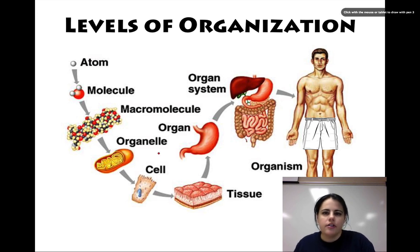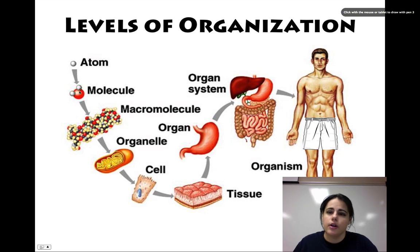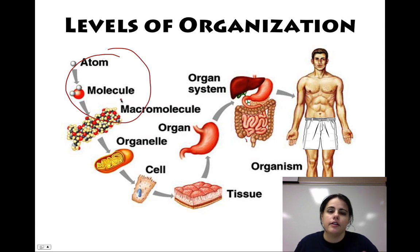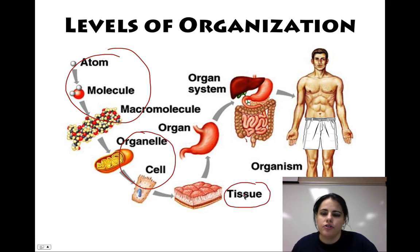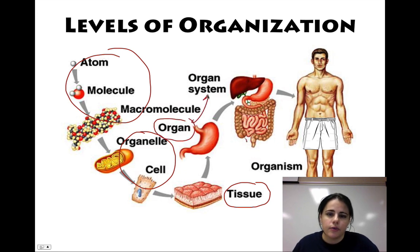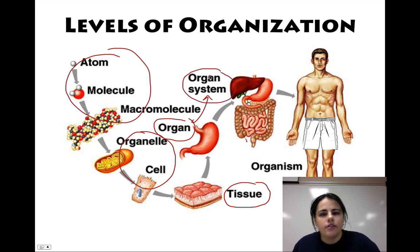The last thing to touch on is the levels of organization. This first chapter is going to cover pretty much everything here as an overview and review. We're going to look at the chemical level — atoms, molecules, and macromolecules like DNA, proteins, carbs, and lipids. Then we'll review cell parts and cell processes. Then I'll introduce you to tissues, and do an overview of major organs of the different organ systems and what each system functions to do. That's the main thing we'll cover in this class.